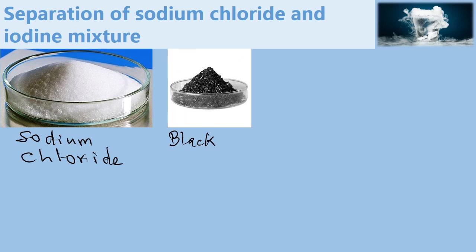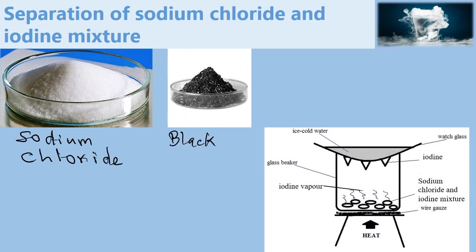When we take these two substances and mix them together, we will form a mixture that we can separate using a simple method which we call sublimation. In this case, we will take the mixture, place it in a glass beaker, cover the glass beaker with a watch glass, and add some cold water on the watch glass. Then we will heat the mixture.